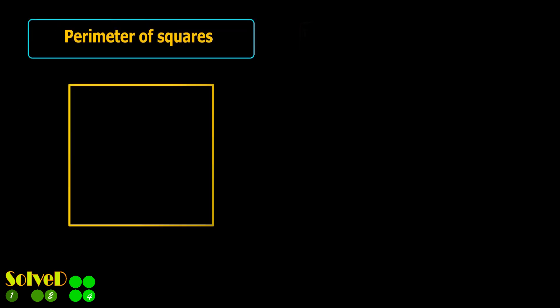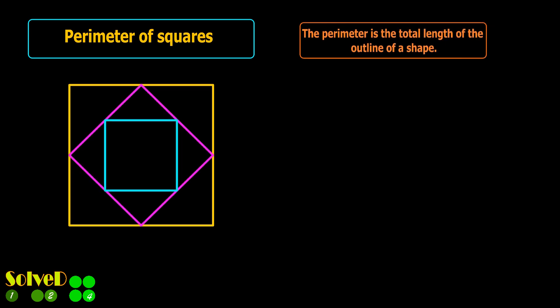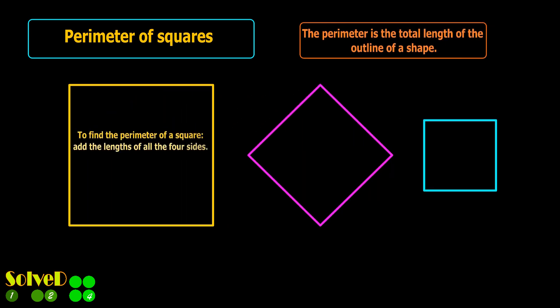The perimeter is the total length of the outline of a shape. For the perimeter of the square, add the lengths of all four sides. This becomes 4 times the side length.